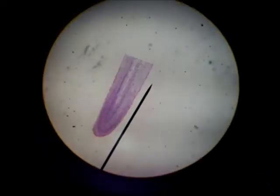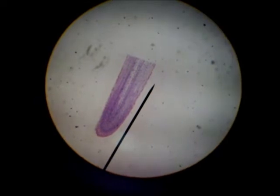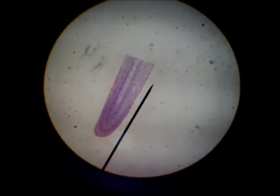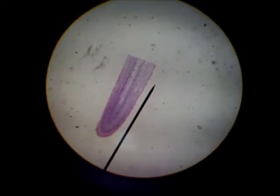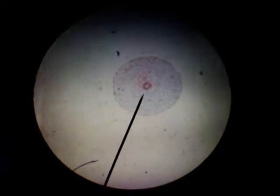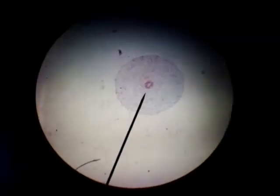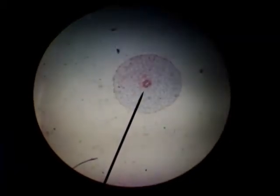This is a root tip of an onion plant. This is a cross section of a root.